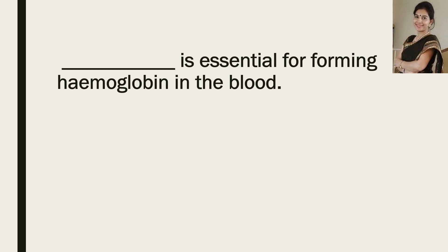Now the next question: DASH is essential for forming hemoglobin in the blood. Which nutrient is essential? And the answer is iron.